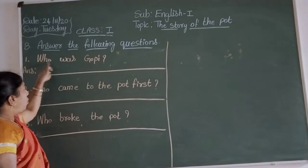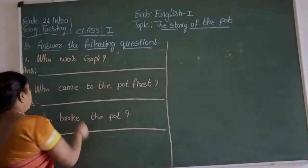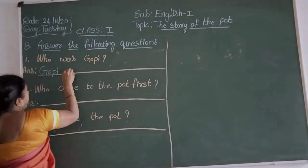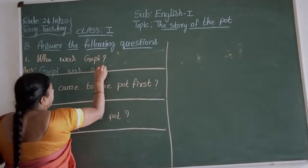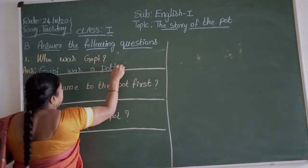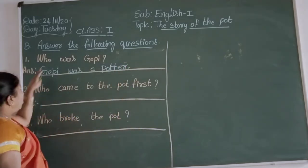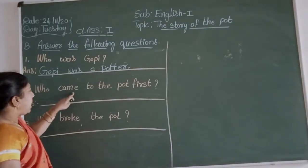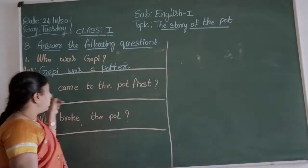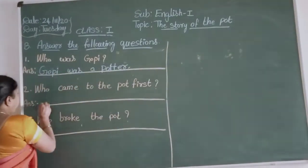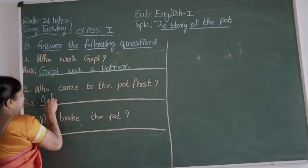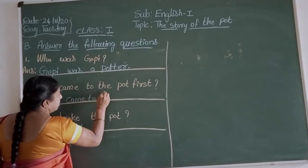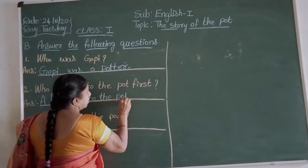First question: Who was Gopi? Gopi was a potter. Second question: Who came to the pot first? A fly came to the pot first.